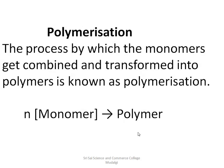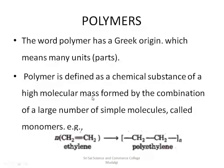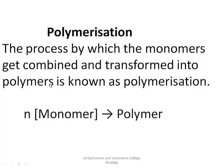The next terminology we are going to study is polymerization. Polymerization is the process by which monomers get combined and transformed into polymers. The small molecules of monomers are joined together to form a polymer — that process is commonly called polymerization. So n number of monomers are joined to form a polymer, and this process is called polymerization.